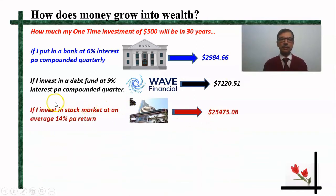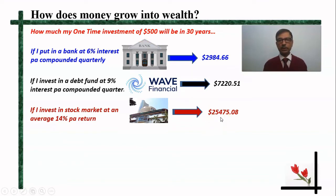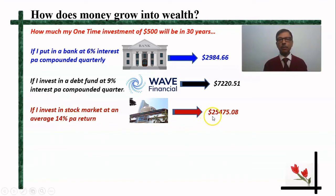Consider another case where that person makes an investment in the stock market, where on a conservative basis he can easily expect a return of 14%. If he does not touch that money, after 30 years he will get $25,475. The stock market will not give a consistent return, but taking an average — sometimes 12%, sometimes 17% — over 30 years, considering an average 14% return, if you have invested wisely in a good stock, that is what you would get.